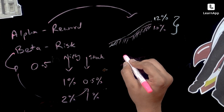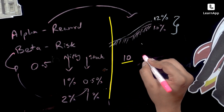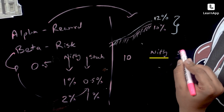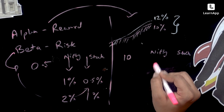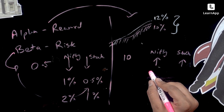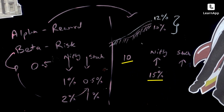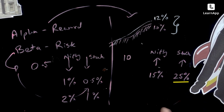Alpha measures reward. Let's say there's an alpha of 10. If Nifty has given a 15% return and the alpha is 10, what will your stock be? Very simple: 15 plus 10 equals 25%. That's what your stock has done — the alpha is 10.